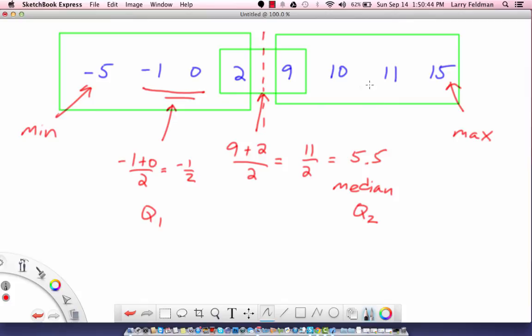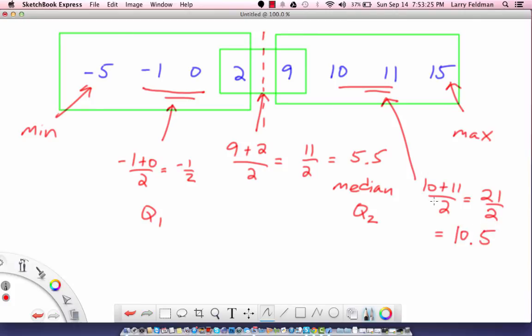Then we look at the median of this green rectangle, which is the average of those two numbers. So we have 10 plus 11 over 2, which is 21 over 2, which is 10.5. So we have the minimum is negative 5, q1 is negative one half, the median or q2 is 5.5, q3 is 10.5, and the maximum is 15.